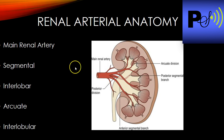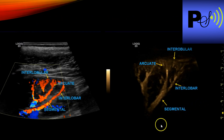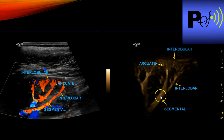The main renal artery comes off the aorta, then branches into segmental arteries — usually about five, though that can vary. Then you have the interlobar arteries, the arcuate arteries, and the interlobular arteries, which are all the way at the superficial part of the cortex. Here's an ultrasound image showing the segmental, interlobar, arcuate, and interlobular vessels.